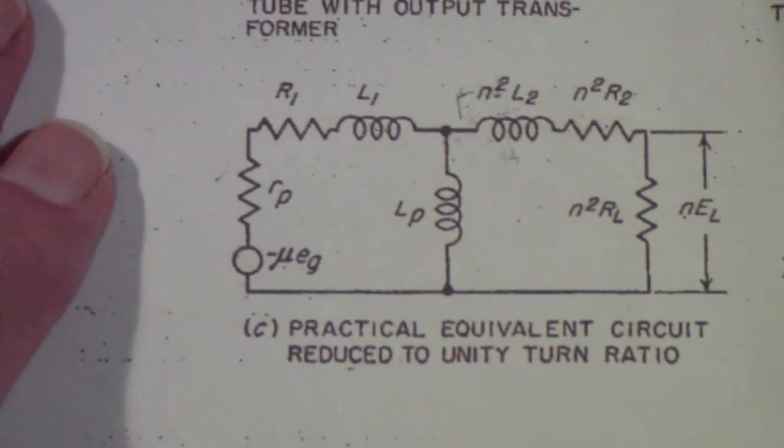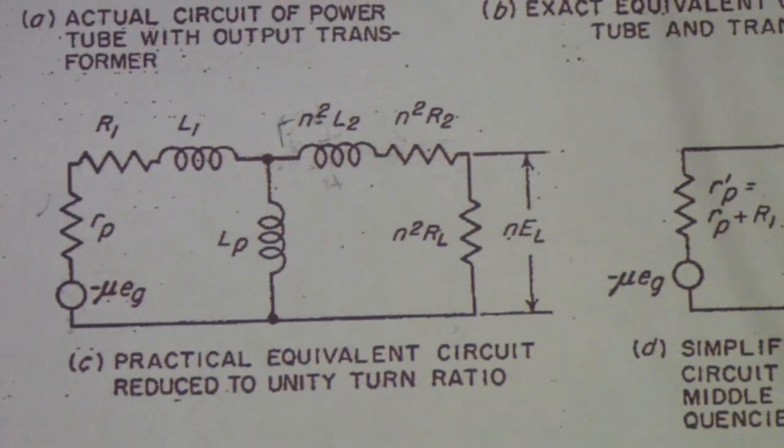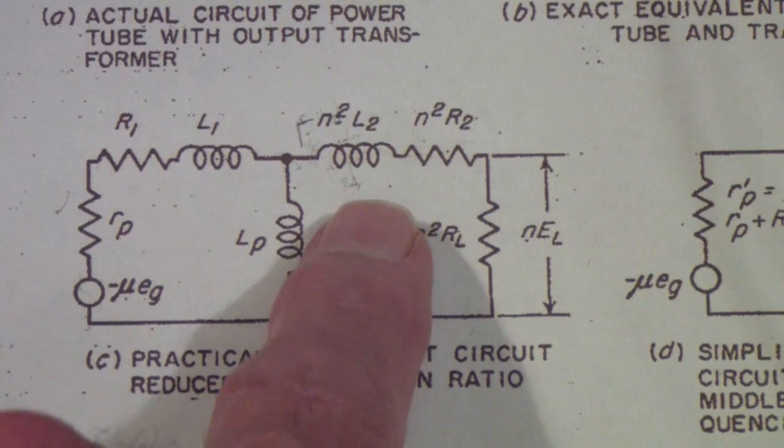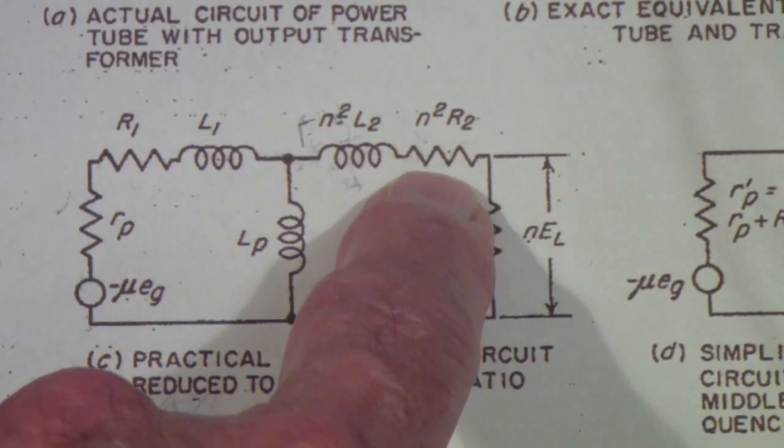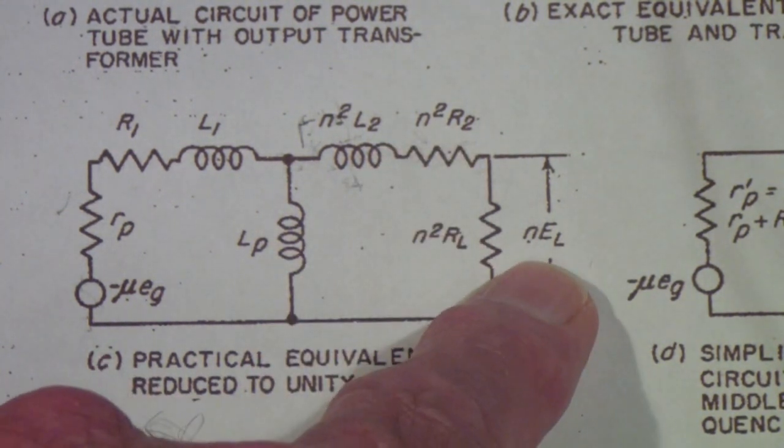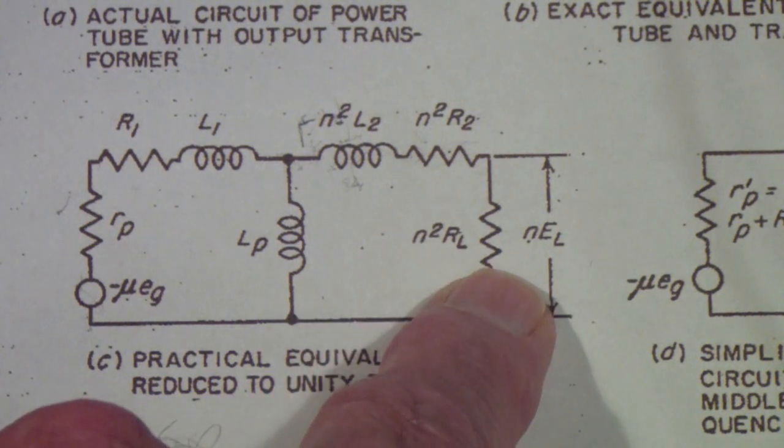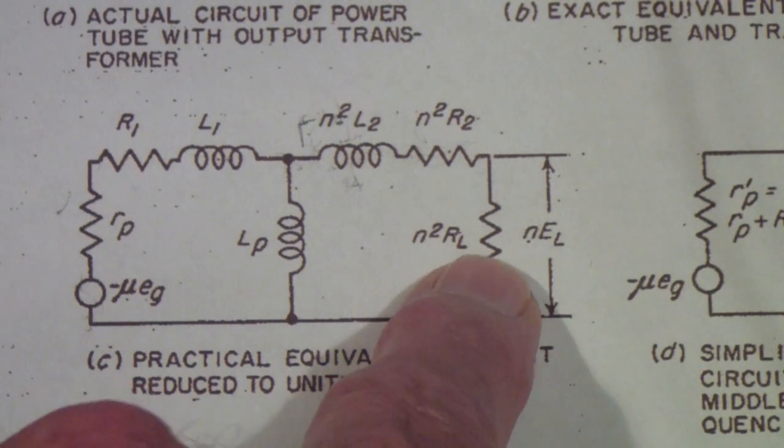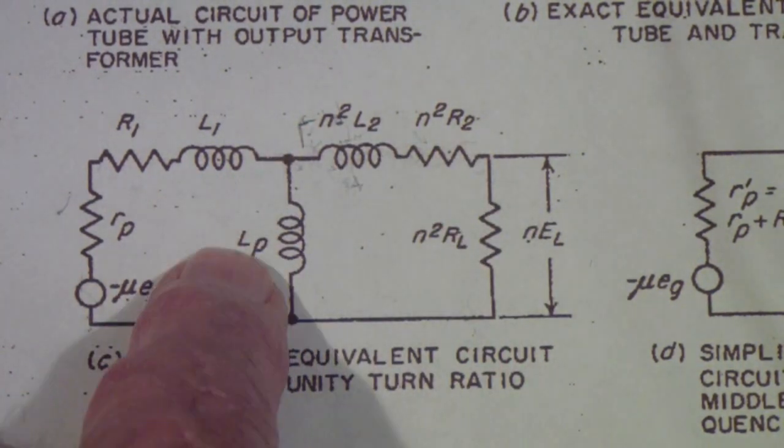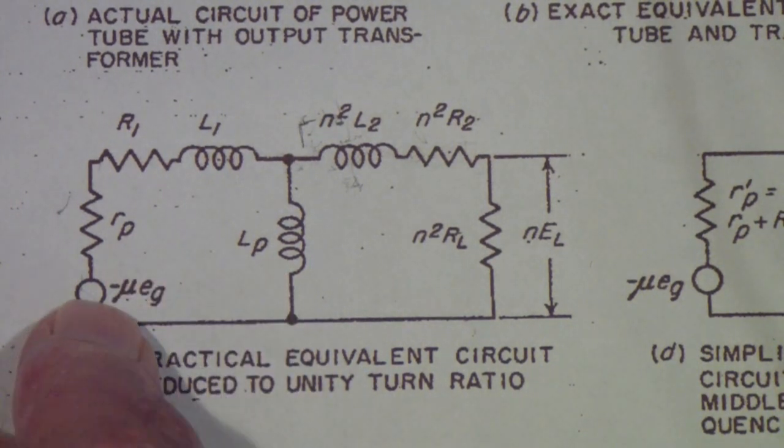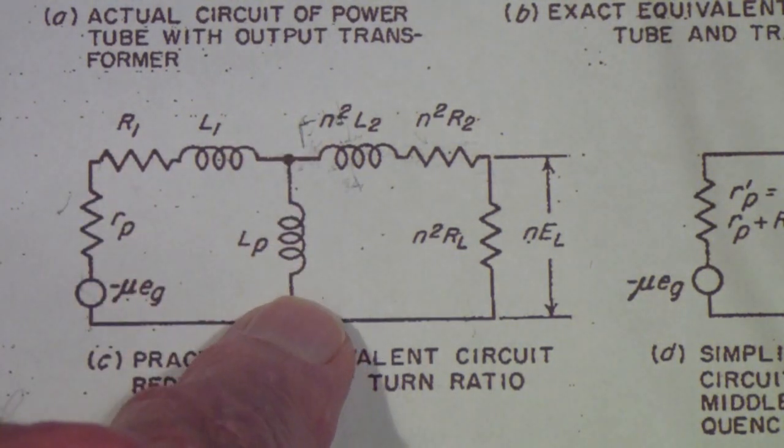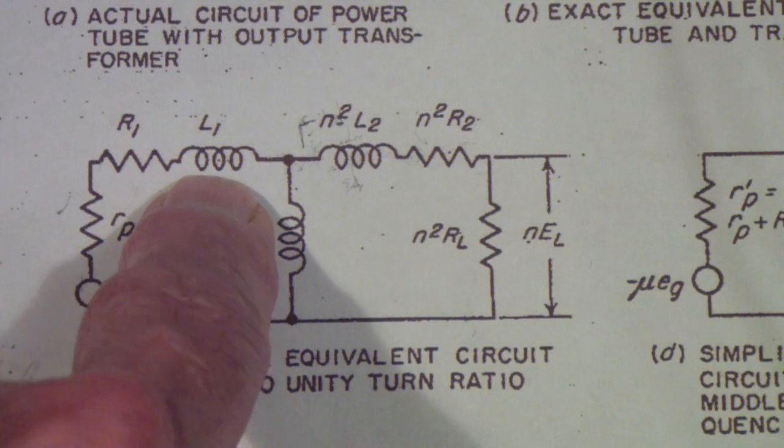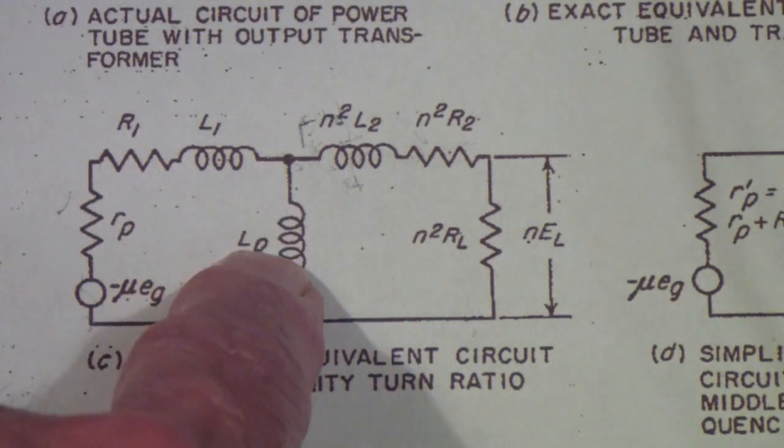A practical equivalent circuit is shown here, in which he has moved L2 to the primary and multiplied by the square of the turns ratio. He also has multiplied the resistance of the secondary by the turns ratio squared. What that does is it moves all of these impedances into the primary. This is what I would call the residual inductance. In other words, it's the inductance of the circuit that is not coupled into the secondary.